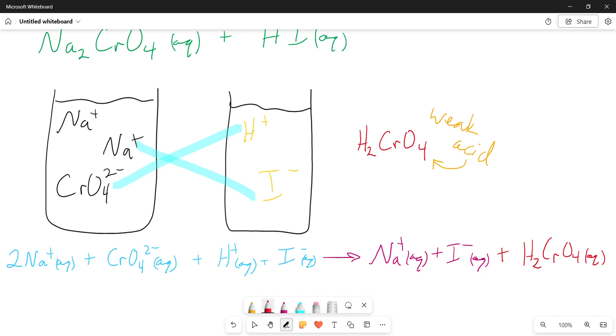So now this isn't balanced, so I need to go through and I need to balance it. Because I have two hydrogens here, so I need two there, and the hydrogen comes with the iodide, so I need two there as well. And I have two sodiums here, so I need two sodiums on the other side, and then two iodides on the other side. So now it's balanced.